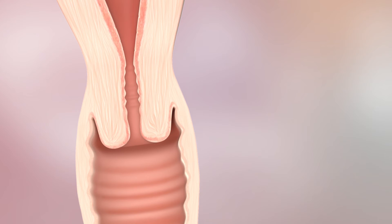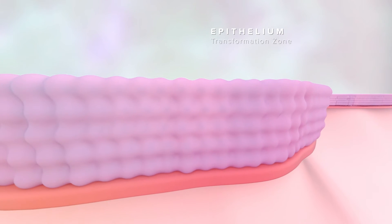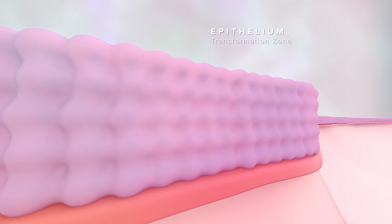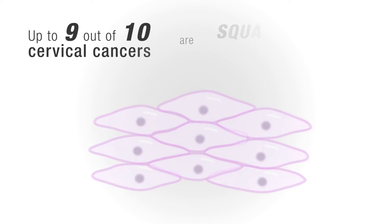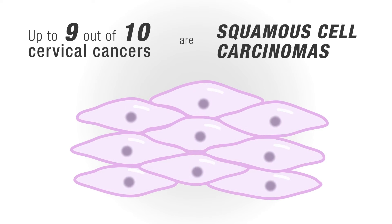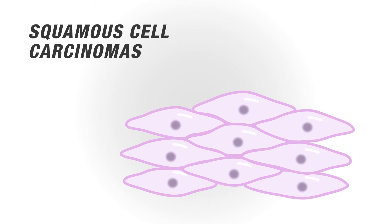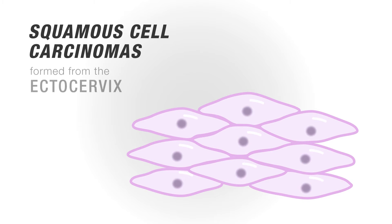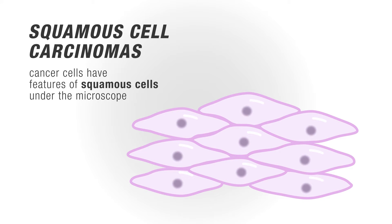The typical site of an HPV infection is the transformation zone of the cervix. Up to 9 out of 10 cervical cancers are squamous cell carcinomas. These cancers form in the cells of the ectocervix, and the cancer cells have features of squamous cells under the microscope.